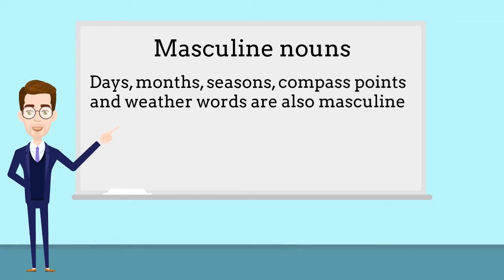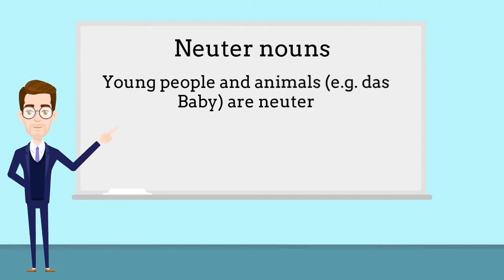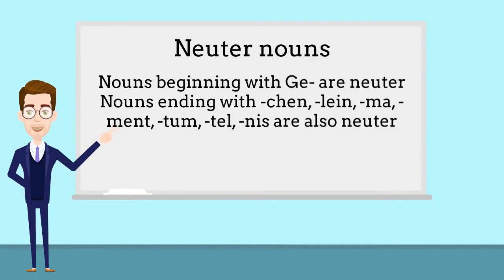Days, months, seasons, compass points and weather words are also masculine. Young people and animals are neuter. Nouns beginning with GE are neuter, and these endings also indicate neuter nouns.